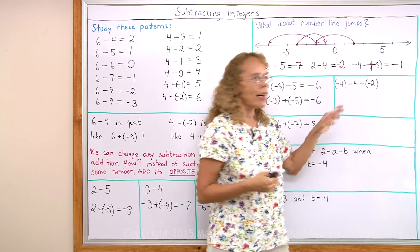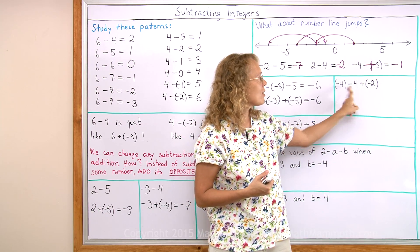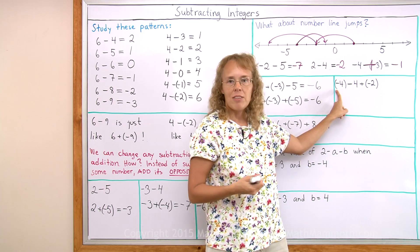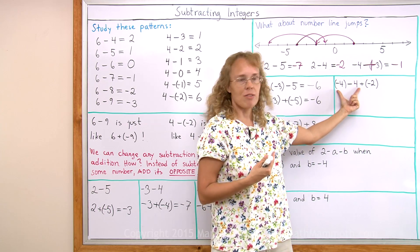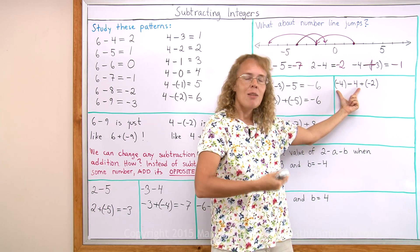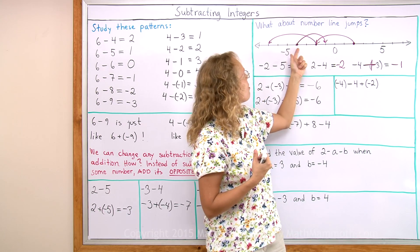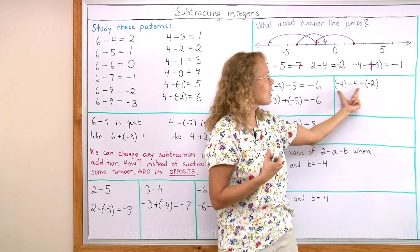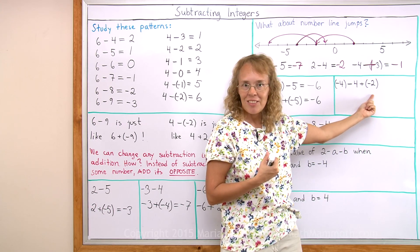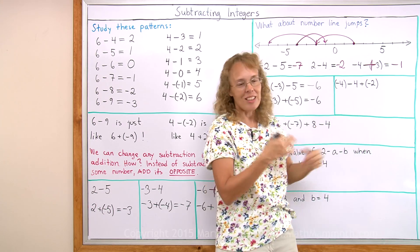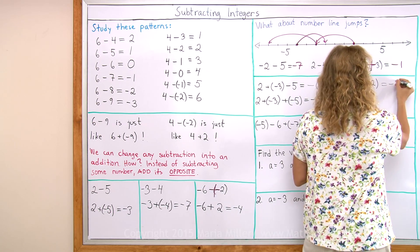Over here again, one way to do it is to start here and go in order. Start with negative 4 minus 4 — do this subtraction first. Negative 4 minus 4 is like a number line jump: negative 4 and 4 steps over there, so this is negative 8. And then add to that negative 2 — more negatives — negative 10.